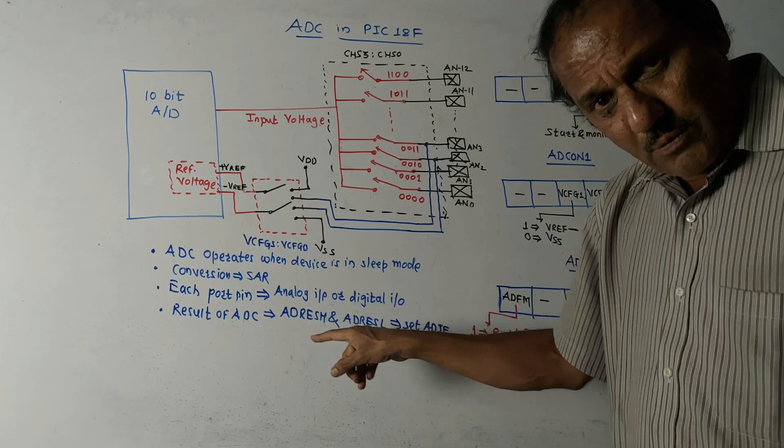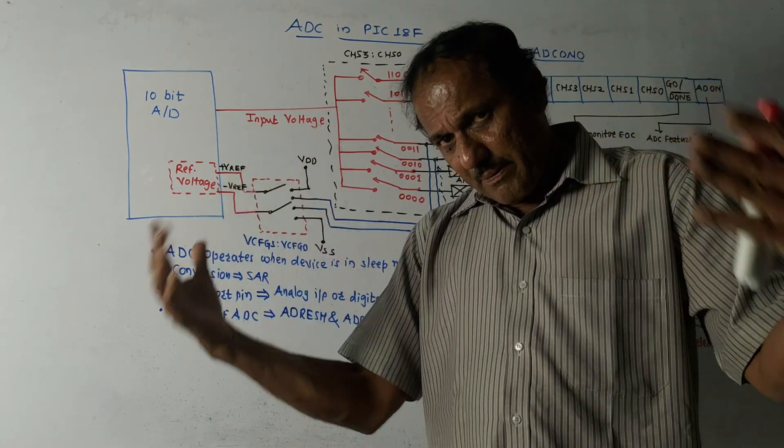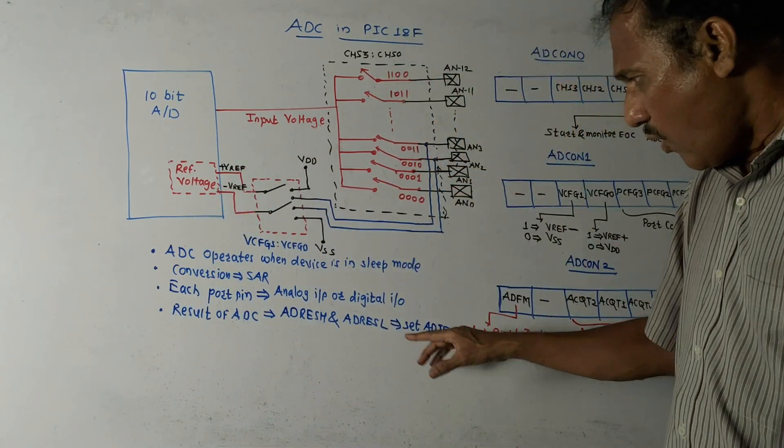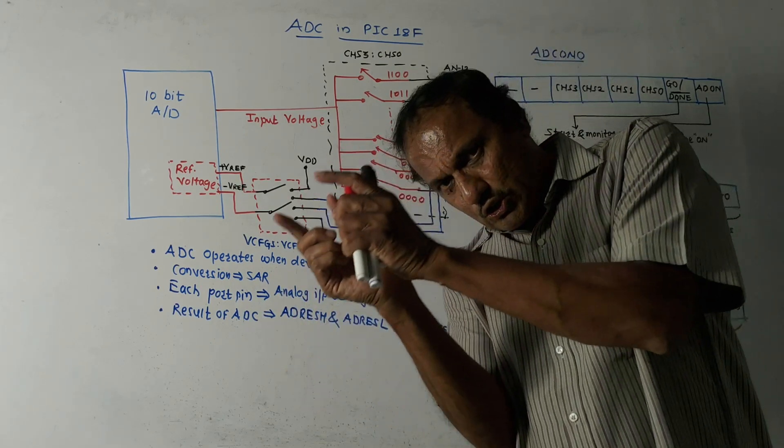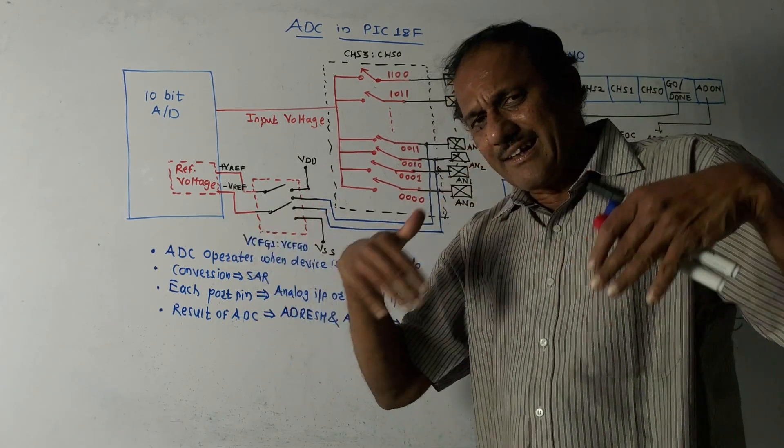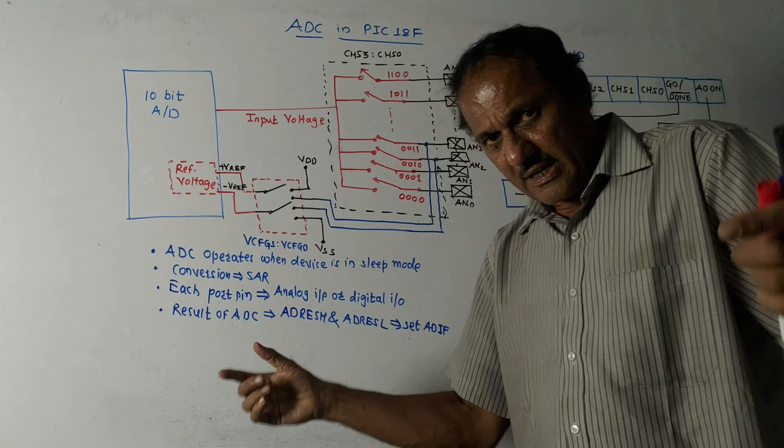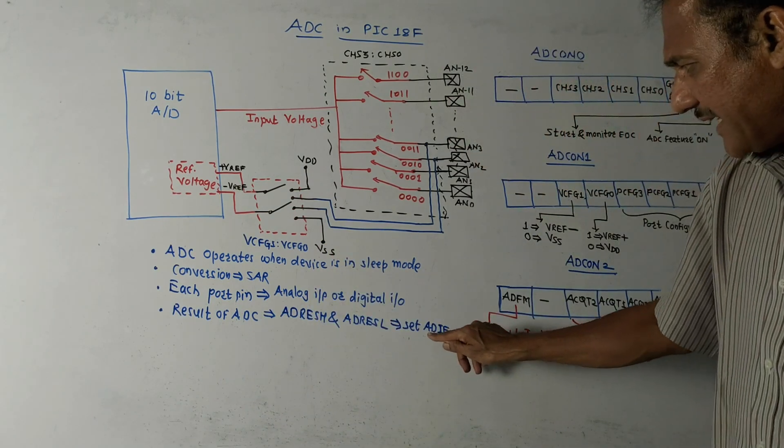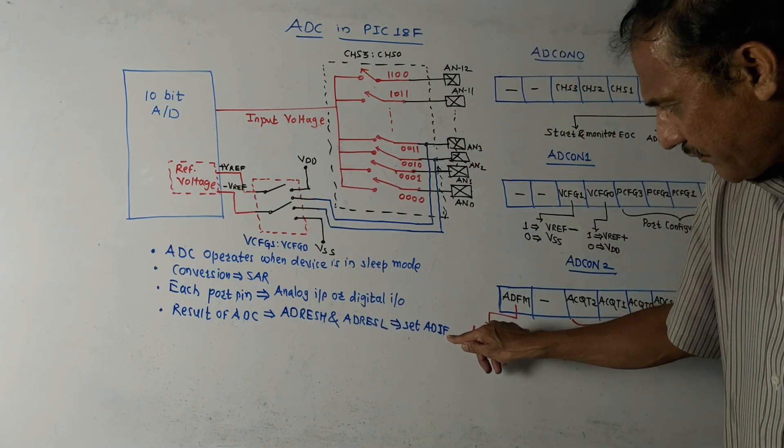This result will be stored in 10 bits; remaining bits will be unused. Now after completion of this, after storing the result like the earlier applications, the corresponding flag, that is analog to digital conversion flag, will be activated.